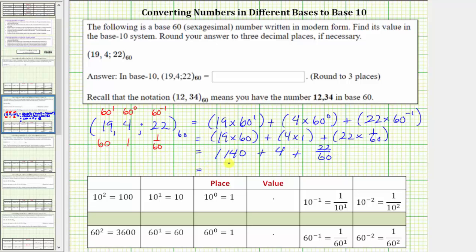Notice as a mixed number, we have 1,144 and 22-sixtieths. But we can also simplify 22-sixtieths. 22 and 60 share a common factor of 2. To simplify, we divide the numerator and denominator by 2. This is equal to 1,144 and 11-thirtieths.